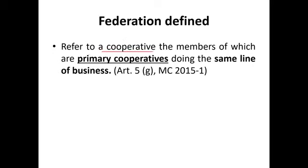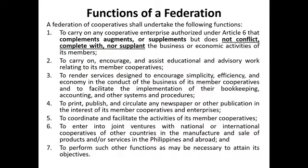The members of a Federation are primary cooperatives. Take note: in a primary cooperative, the members are natural persons doing the same line of business. So for example, a credit cooperative — the members are all credit cooperatives. If a consumer cooperative, they should all be consumer cooperatives, because they must be in the same line of business. The keyword to remember is Federation — kapederasyon — they must be the same line of business.